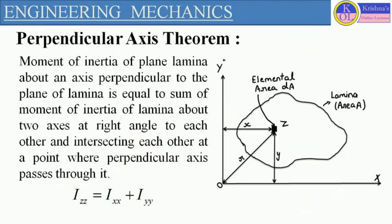According to the perpendicular axis theorem, the moment of inertia of a plane lamina about an axis which is perpendicular to the plane of the lamina is equal to the sum of the moment of inertia of the lamina about two axes which are at right angles to each other, and intersecting each other at the point where the perpendicular axis passes through.